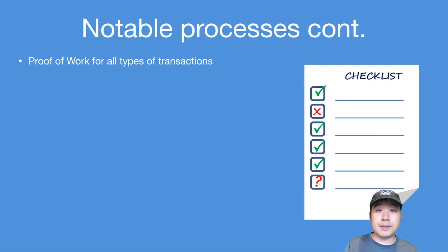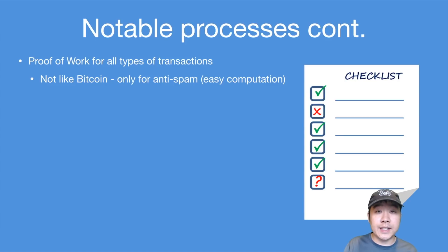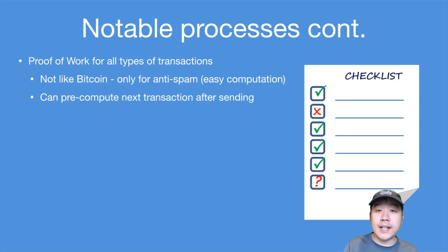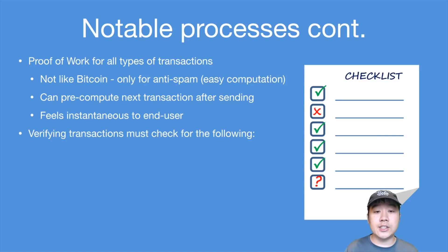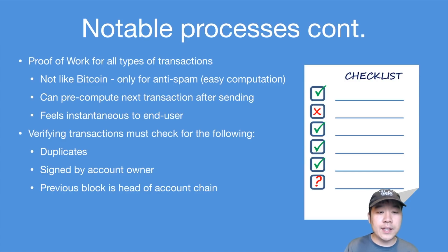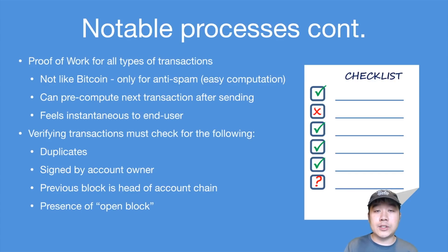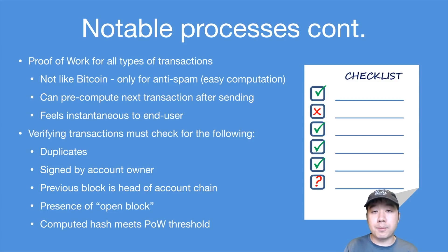Nano also uses proof of work for all types of transactions, but not like Bitcoin — this is only for anti-spam. The computation is very easy; you don't need huge ASIC farms. You can also pre-compute the proof of work for the next transaction after sending one, which makes it feel instantaneous for the end user, since you can't send transactions faster than you compute the required proof of work. In terms of verifying transactions, nodes must check for: duplicate transactions, whether it's properly signed by the account owner, whether the previous block is the head of the account chain, the presence of an open block to start an account chain, and that the computed hash meets the proof of work requirements.